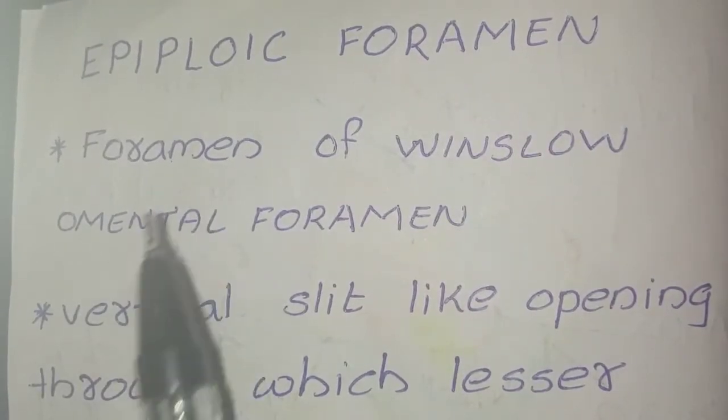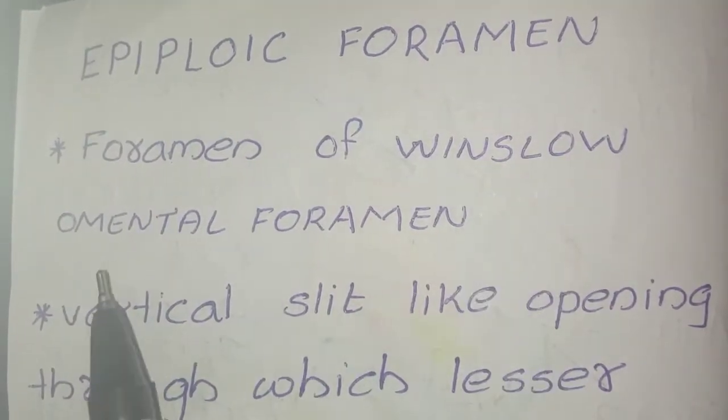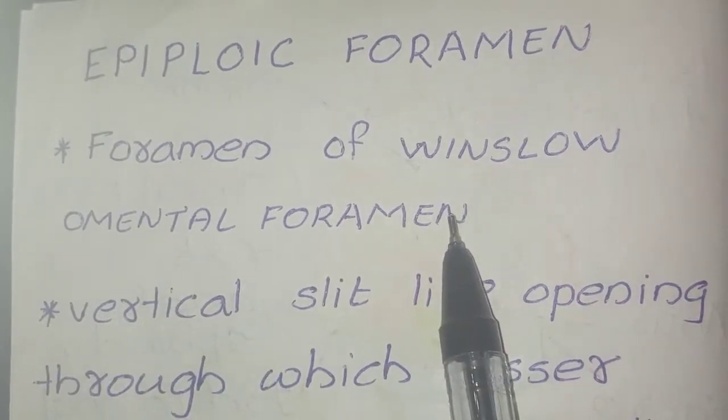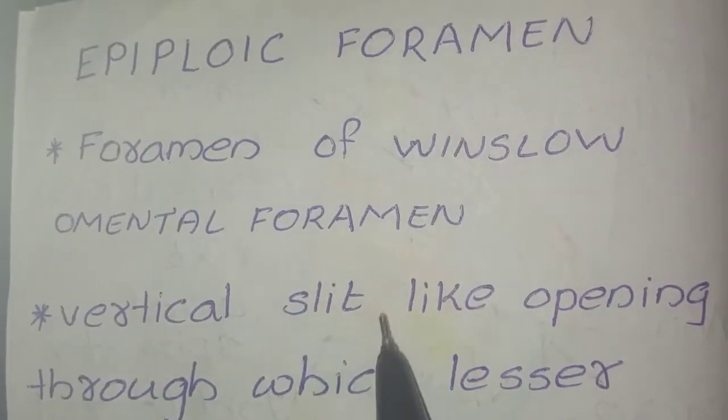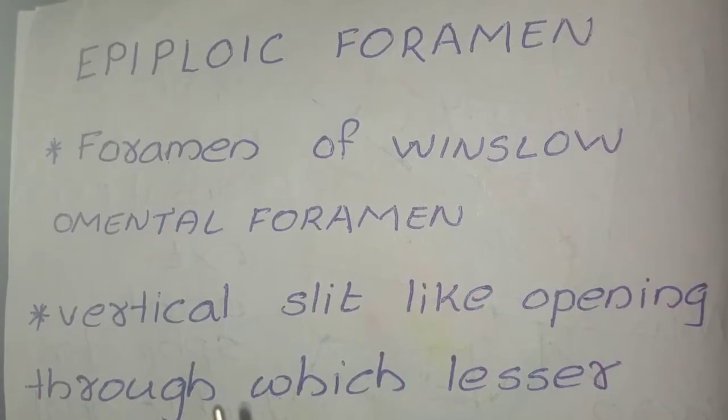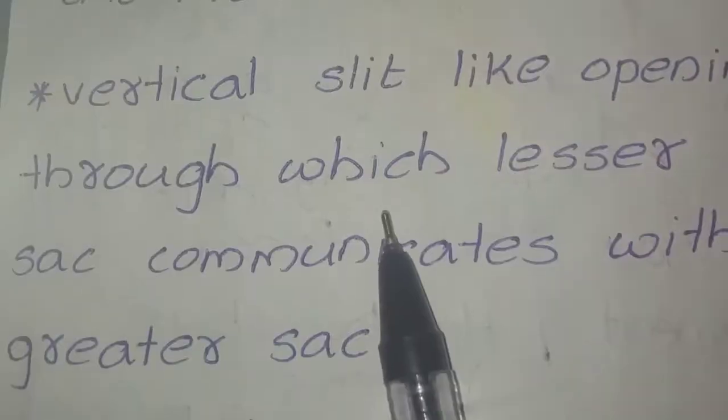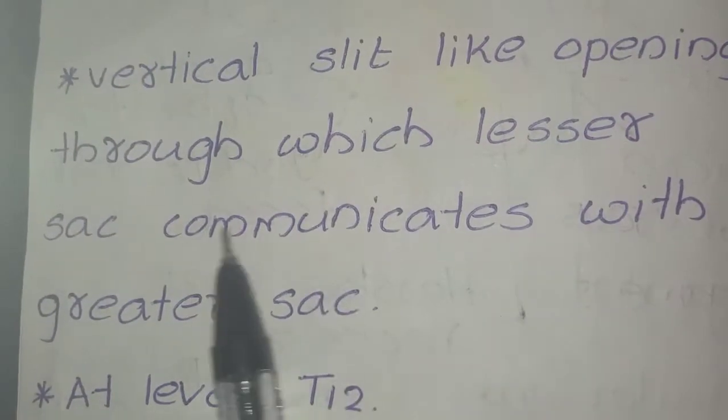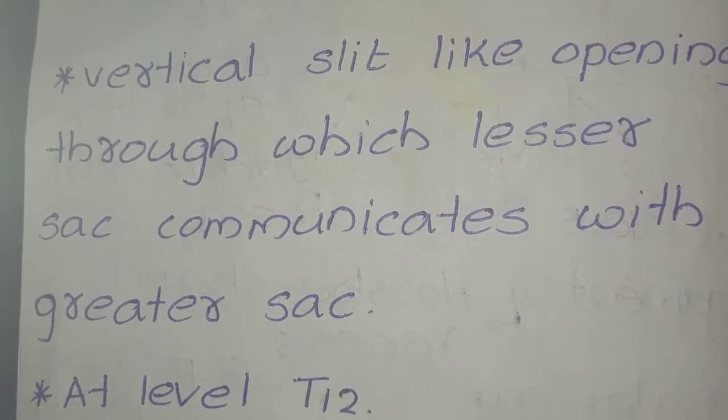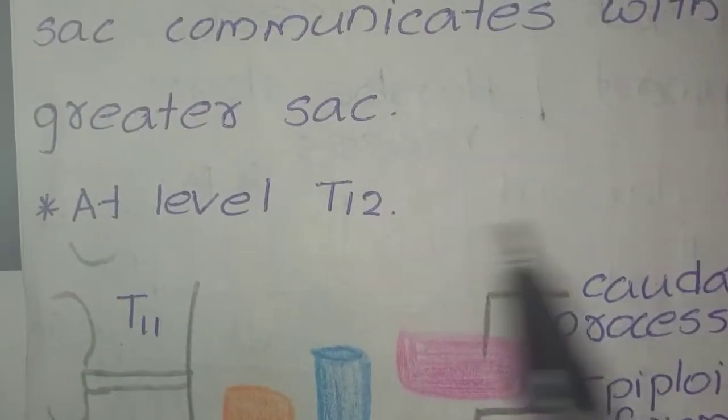So the Epiploic Foramen is also known as the Foramen of Winslow or Omental Foramen. And it is a vertical slit-like opening through which the lesser sac communicates with the greater sac, and it is at the level of T12.